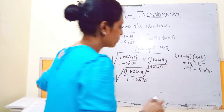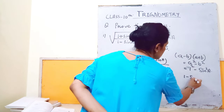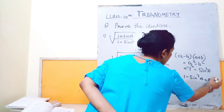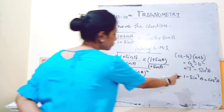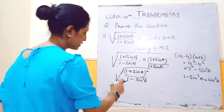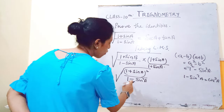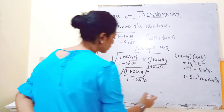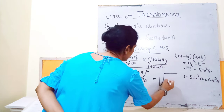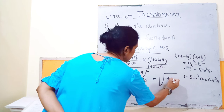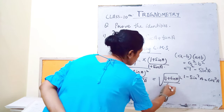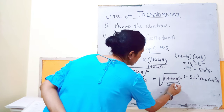Now, (1 - sin²A) — this is one of the identities. We know that 1 - sin²A = cos²A. So in place of (1 - sin²A) we can write cos²A. So here it will be (1 + sinA) whole square upon cos²A.